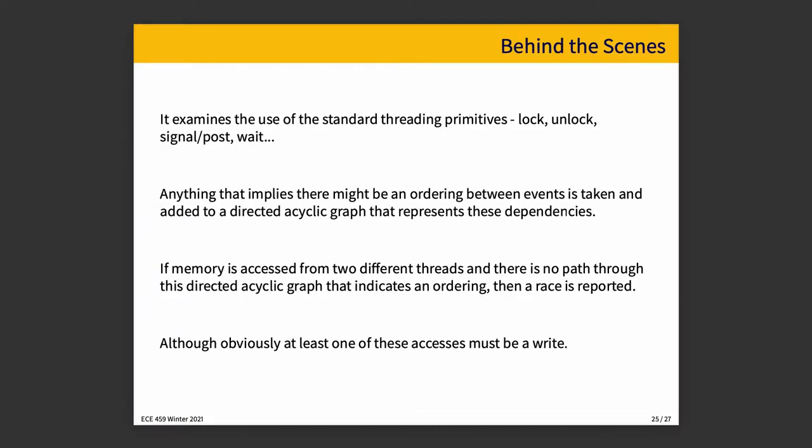Behind the scenes to check this, the tool is looking at the use of all the standard primitives, lock, unlock, signal, post, wait, that sort of thing. And anything that implies a potential ordering between events is taken and added, again, to a directed acyclic graph that represents the dependencies. And if it observes memory being accessed from more than one thread and there's no path through this graph that indicates an ordering, it is treated as though it is race, keeping in mind that at least one of those accesses has to be a write.